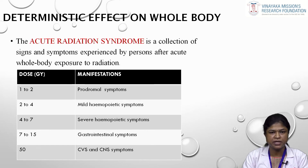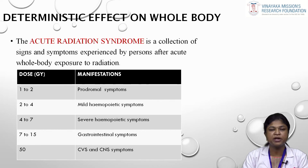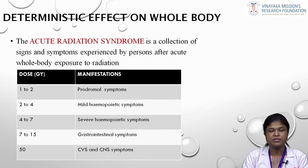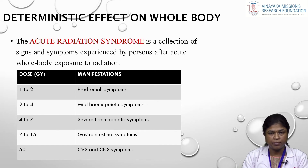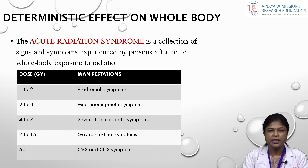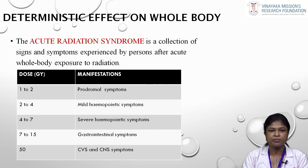At one to two grays, the person experiences prodromal symptoms: malaise, fatigue, fever, and tiredness. This dose is not sufficient for radiotherapy, so the radiation is increased to two to four grays, leading to mild hematopoietic syndrome — a decrease in red blood cells, white blood cells, and platelets. When radiation is increased to four to seven grays, it leads to severe hematopoietic symptoms including anemia, increased hemorrhage, and increased susceptibility to infection.